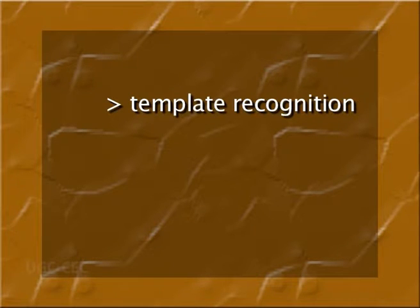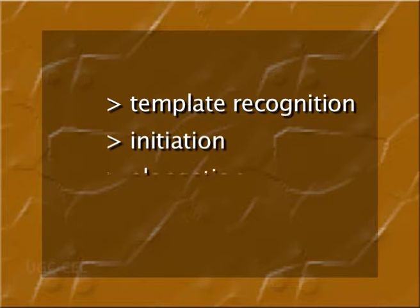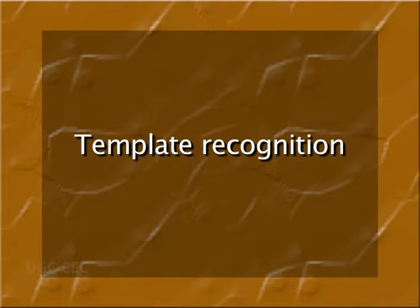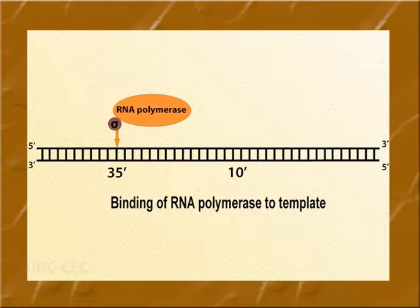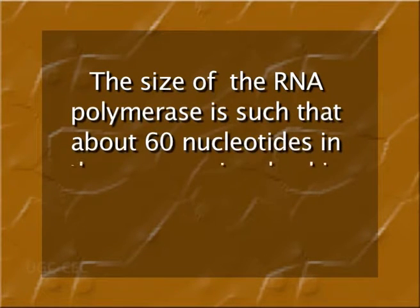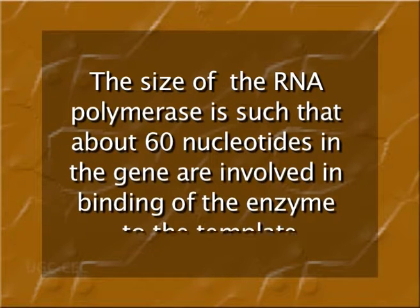The entire process of transcription can be divided into the following steps: number one, template recognition; number two, initiation; number three, elongation; and number four, termination. In template recognition, RNA polymerase has to recognize the correct region of the gene and bind at that site, which is the minus 35 region. The size of the RNA polymerase is such that about 60 nucleotides in the gene are involved in binding of the enzyme to the template.